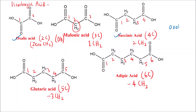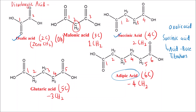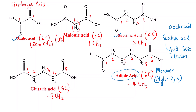Oxalic acid and succinic acid are regularly used in acid-base titrations, so we must know their structures. Adipic acid is important because it is a monomer used in the synthesis of the polymer called Nylon-2,6.